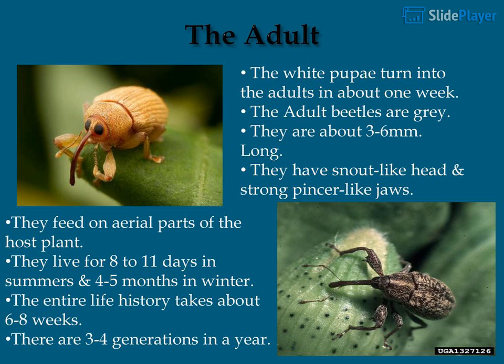The white pupae turn into adults in about 1 week. The adult beetles are gray, about 3 to 6 millimeters long, with a snout-like head and strong pincer-like jaws. They feed on the aerial parts of the host plant and live for 8 to 11 days in summer and 4 to 5 months in winter. The entire life history takes about 6 to 8 weeks, with 3 to 4 generations per year.